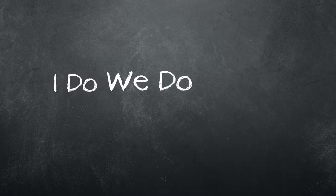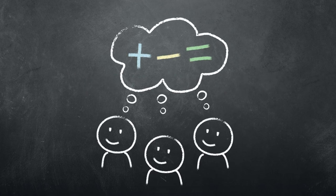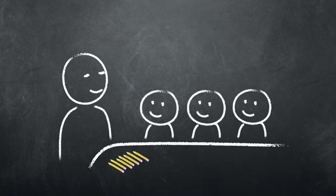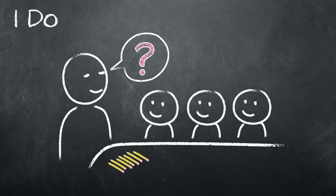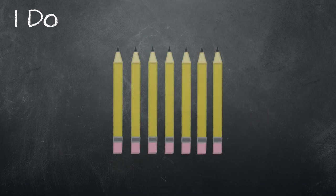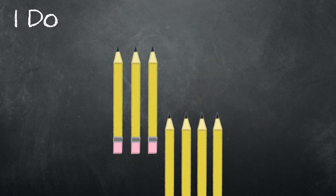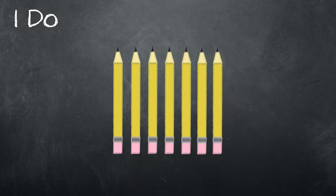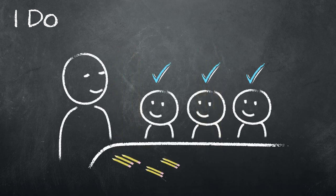Here is how a teacher might use I do, we do, you do in a math lesson about subtraction. First, during the I do section, the teacher explains how subtraction works and demonstrates by showing seven pencils and taking four away. The teacher shows a few different examples to make sure the students understand.